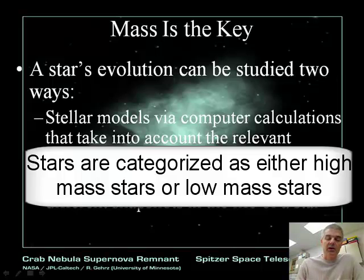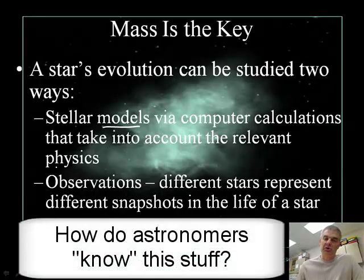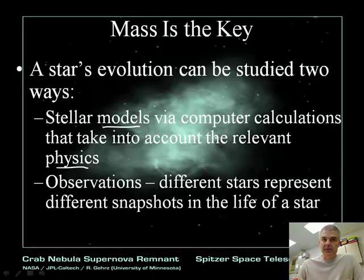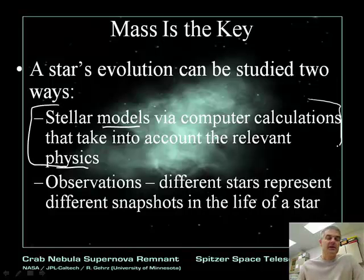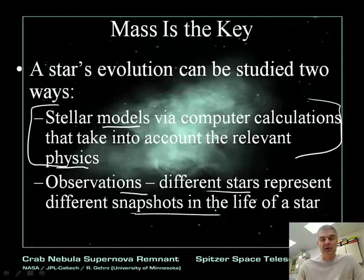How do we know all of this? There are computer models that take into account all the relevant physics equations to figure out what's going to happen. Additionally, we have observations — we see different stars in different stages of their life cycle. We can find black holes, neutron stars, red giants, yellow giants, and main sequence stars out in space. We have even seen supernovas exploding in the universe occasionally.